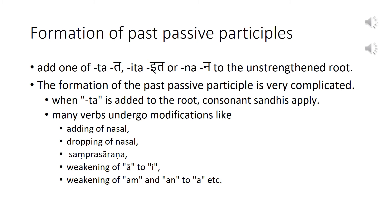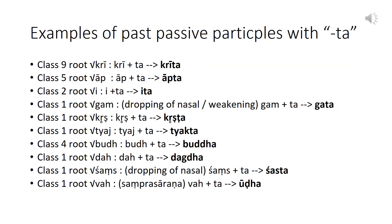The formation of the past passive participle is very complicated. First of all, when 'ta' is added to the root, consonant sandhis apply. Secondly, many verbs undergo modifications like adding of nasal, dropping of nasal, samprasarana, weakening of 'aa' to 'e', weakening of 'am' and 'an' to 'aa', etc. Some examples are given here.